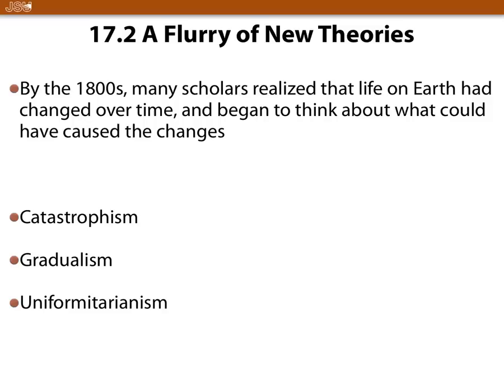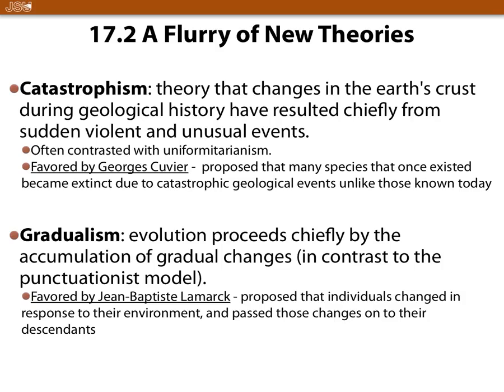There are a couple different viewpoints about how change happens. Catastrophism thinks change happens in spurts — you go along a long time without any change, then there's a spike in change, then it comes down, and you keep going with another spike. That's what we call a punctuated model. Gradualism is a little bit different — evolution is by an accumulation of gradual changes, kind of like a wave.